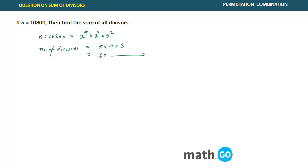So if you are being asked, if you add all 60 divisors, what will you get? This is being asked here.